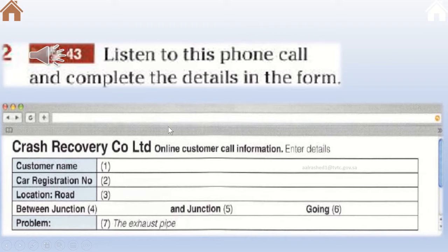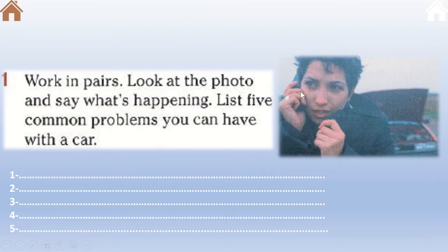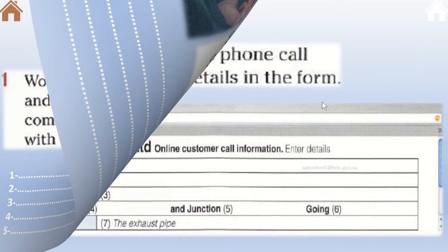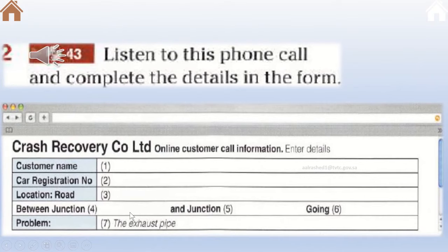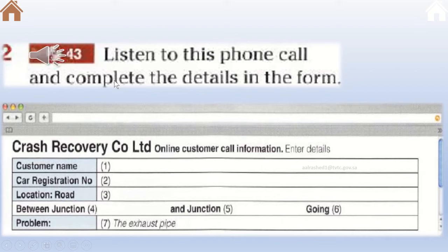For number two, we need to fill out a table. If you called a company, the person who received the call must fill out certain information: the name, the car registration number, the location, and the problem. This is what the worker does if the driver calls an insurance company, for example. We are going to fill out this information based on the listening we are about to hear.